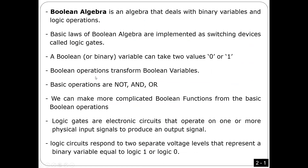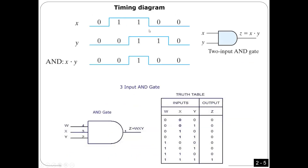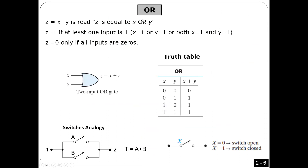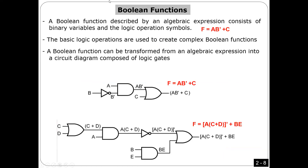Let me summarize what I did in this chapter and connect everything together. Number one: we have three basic operations — NOT, AND, OR. I gave you the symbol for each one and the truth table showing how it works. Any logic circuit is going to be done using these three basic operations.